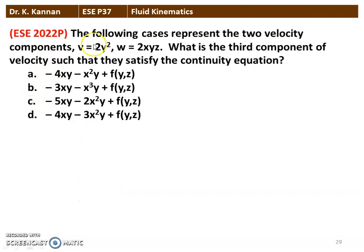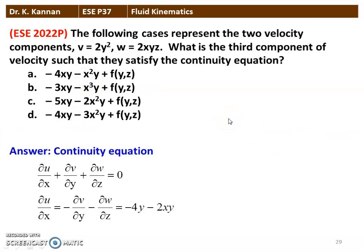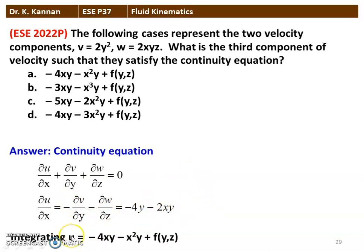The next question from the 2022 question paper: given velocity components V = 2Y² and W = 2XYZ, find the third component U satisfying the continuity equation. From ∂U/∂X + ∂V/∂Y + ∂W/∂Z = 0, we get ∂U/∂X = −∂V/∂Y − ∂W/∂Z = −4Y − 2XY. Integrating: U = −4XY − X²Y + f(Y, Z). Option A is the correct answer.